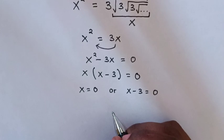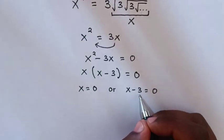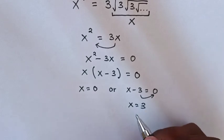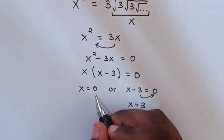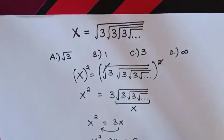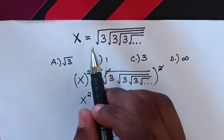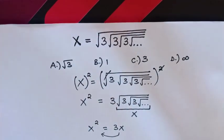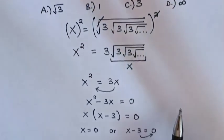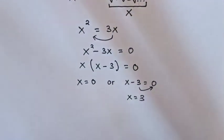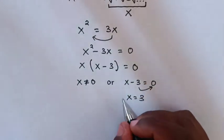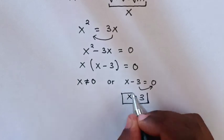From x minus 3 is equal to 0, we take negative 3 to the right side, so x is equal to 3. But here, x is equal to 0 — from our problem, x is equal to square root of 3, square root of 3 and infinite — so x cannot be equal to 0. So x equals 3 is our only answer.